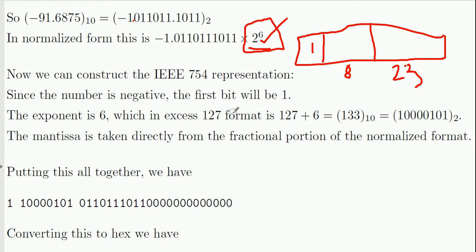Now the exponent is 6. So 127 is the limit. And the overflow for that will be plus 6. And you get 133 in decimal. Then you convert it into binary. And that will be your exponent part. So this will be 10000101. This is the same thing.